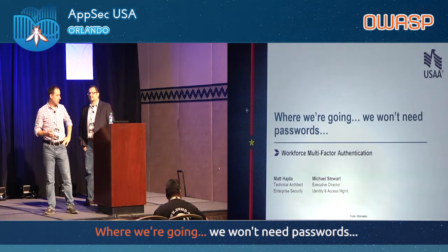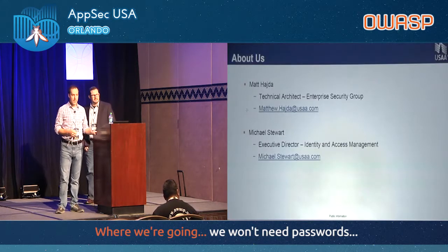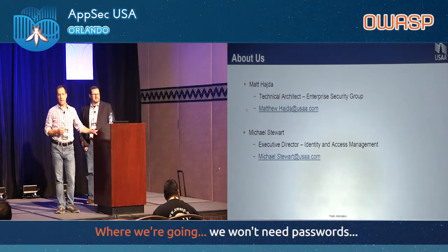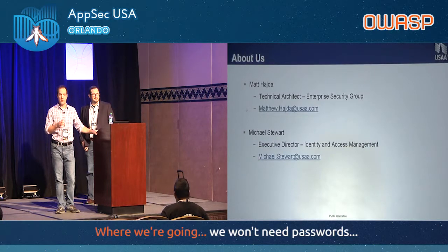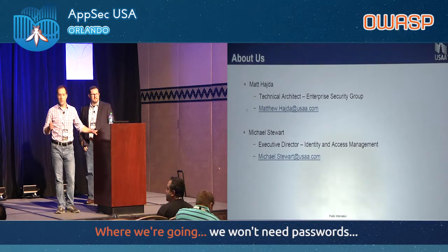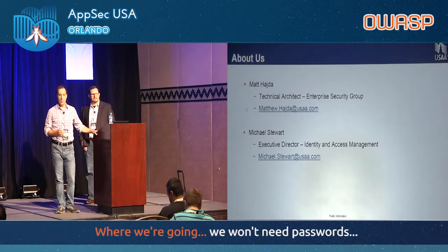My name is Matt Haida, and I'm a technical architect at USAA. I've got a lot of background in different areas of security, everything from Active Directory to cryptography, web application security. Most recently, I've been focusing on identity and access management technologies at USAA, primarily on the technical side.